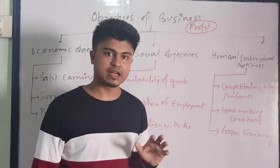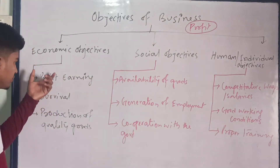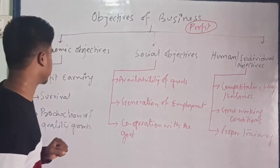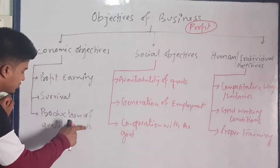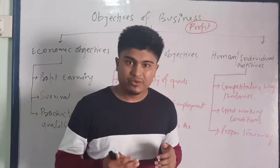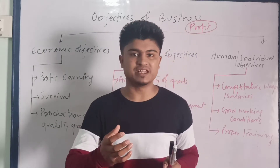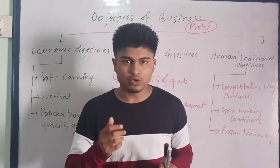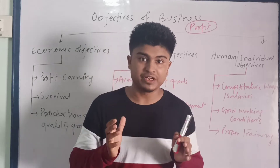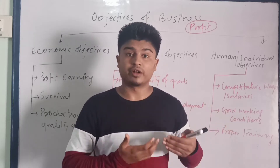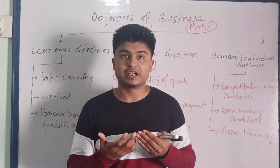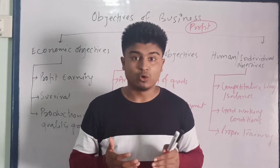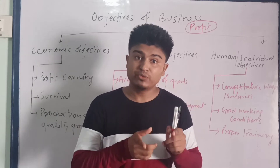Under economic objectives there are several important objectives. First is profit earning — the main objective of business is to earn profit. If we earn a sufficient amount of profit, we can think of expanding, diversifying, growing the business from one place to another, increasing production and sales. All of this is possible when profit earning is sufficient.